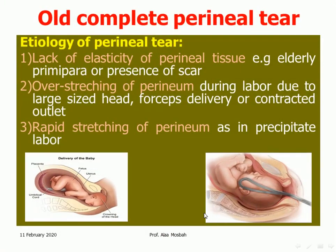The etiology of perineal tear may be one of three causes: lack of elasticity of perineal tissue, as in elderly primae or presence of an old scar in the perineum; over-stretching of the perineum during labor due to a large-sized fetal head; forced delivery or contracted outlet; or rapid stretching of the perineum in precipitate labor.